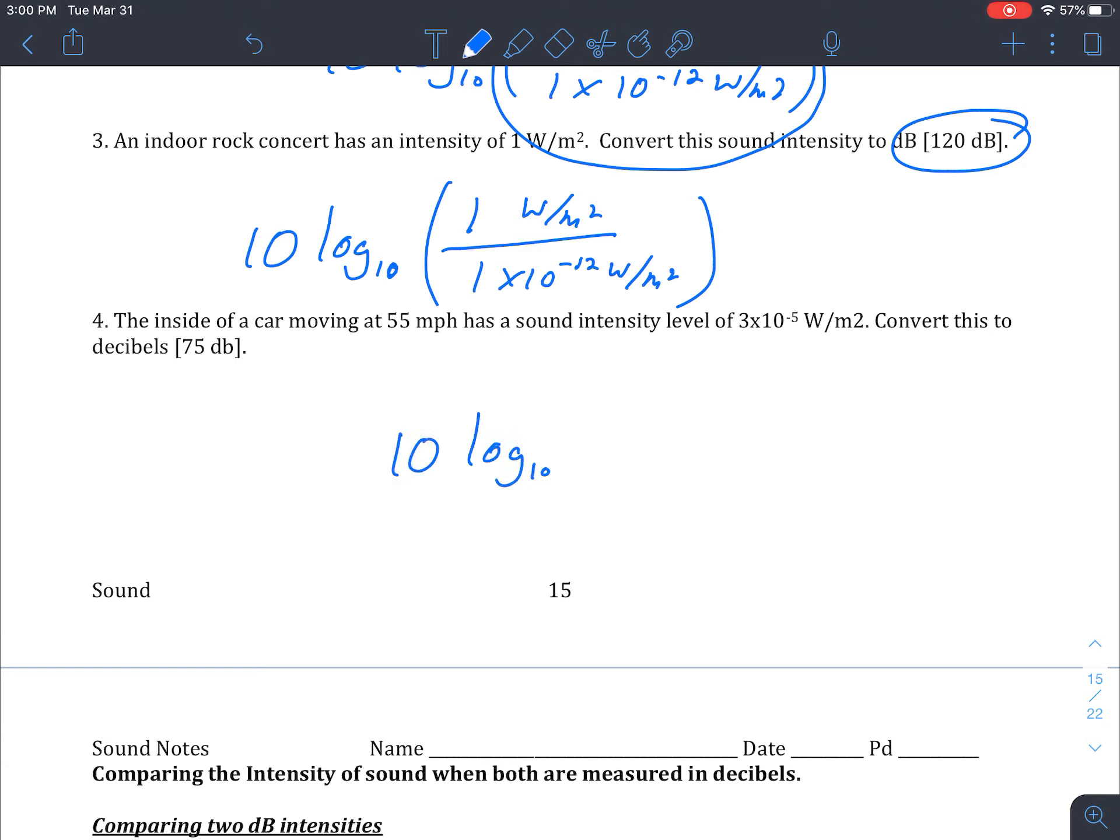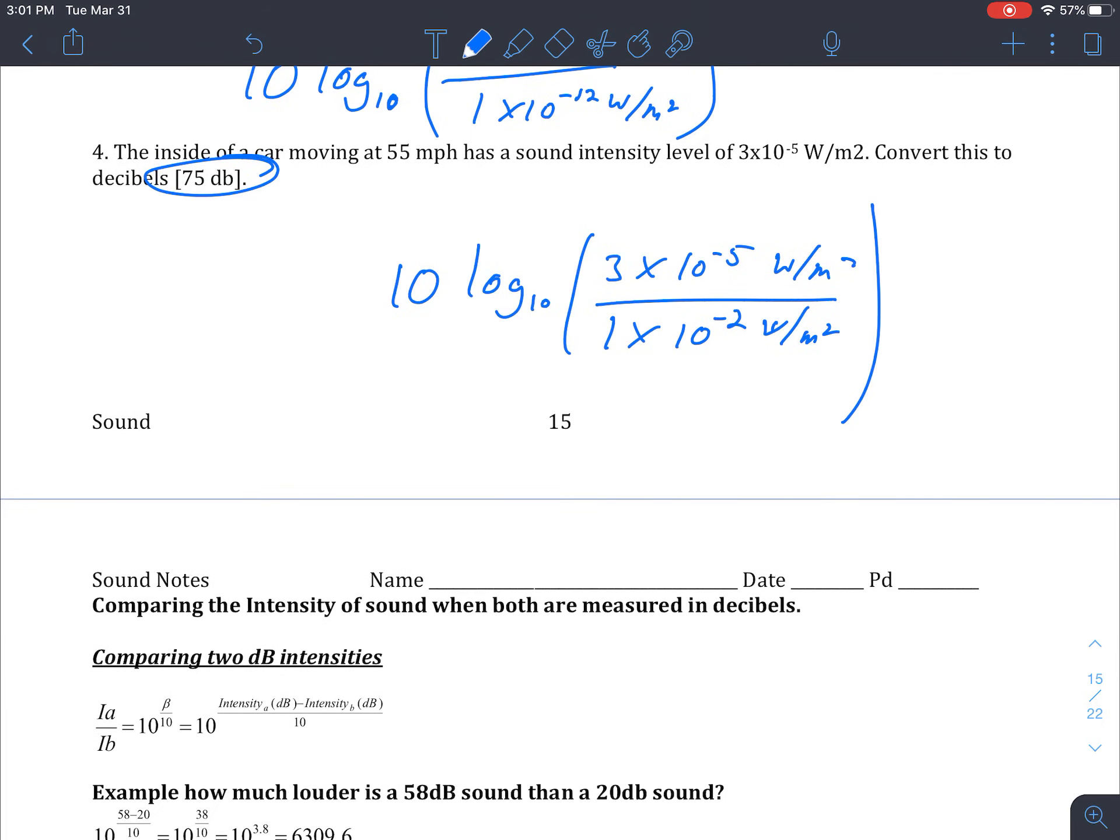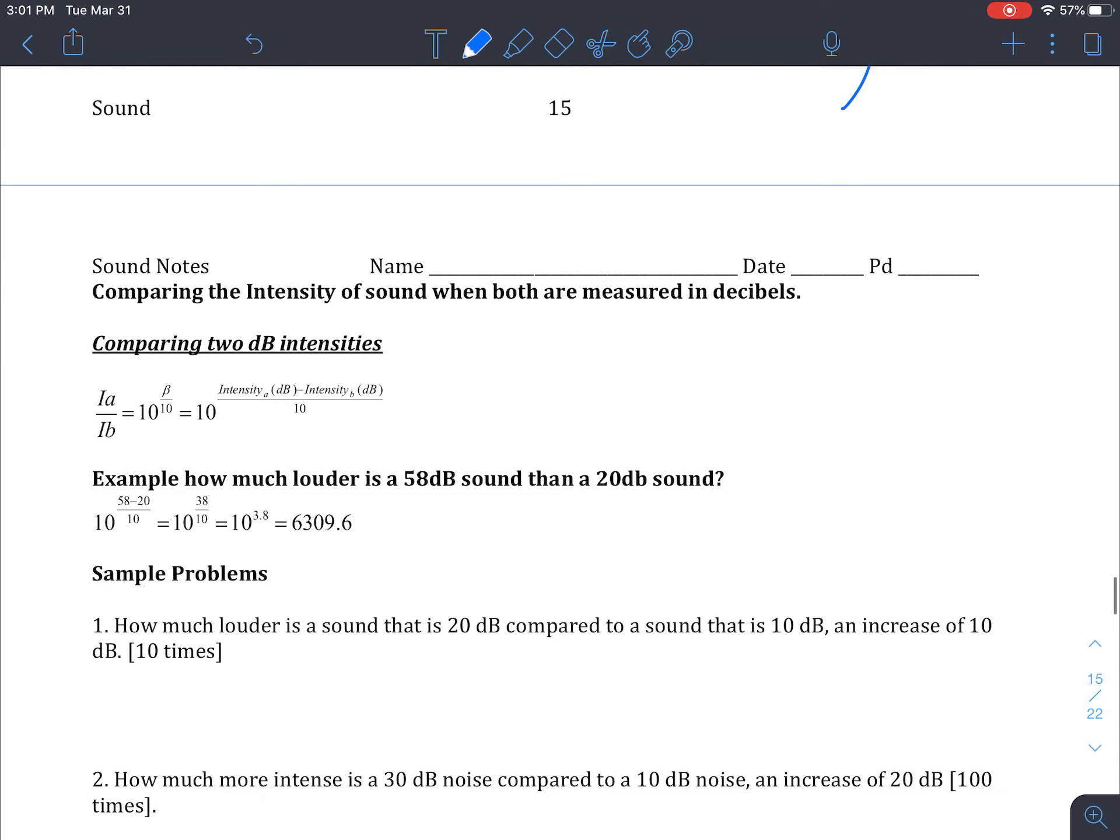So again, 10 log base 10, 3 times 10 to the negative 5th watts per meter squared over our lowest intensity. And we should be able to plug that in and get 75. And again, if you're struggling with this, let me know. Send me a school G message and the type of calculator you have, and I'll try and send you a message or video back with step-by-step instructions.